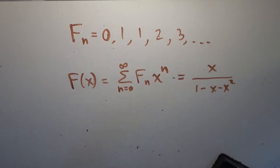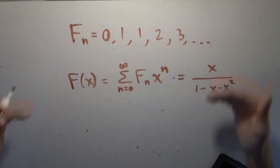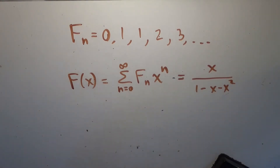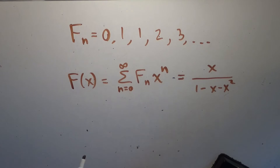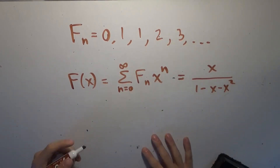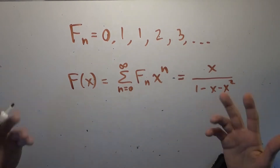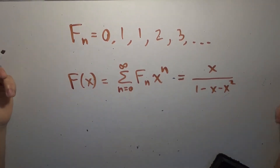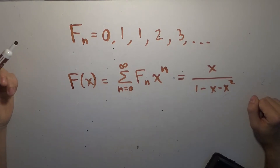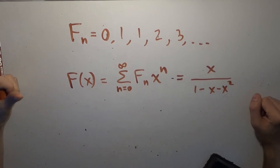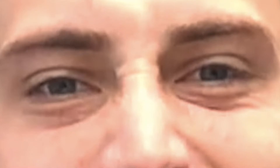We wanted to find the generating function for this sequence, and what we were able to discover is that if we define capital F of x to be the sum from n equals 0 to infinity of the nth Fibonacci number times x to the n, you end up with the lovely function x divided by 1 minus x minus x squared, which has a radius of convergence of 1 over phi, the golden ratio. This is all well and good — it's very pretty, very nice — but the problem is this is only one sequence. It isn't general enough.